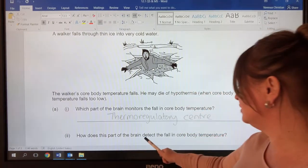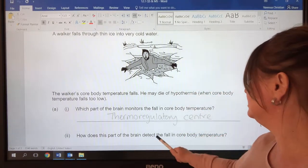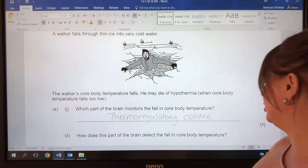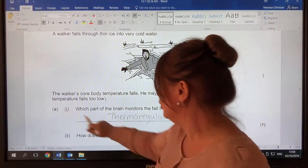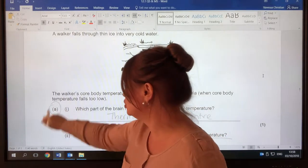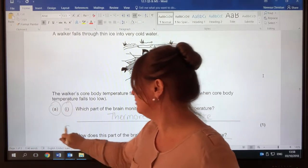How does this part of the brain detect the fall in core body temperature? So there's a clue. This part A has two parts, part 1 and part 2.